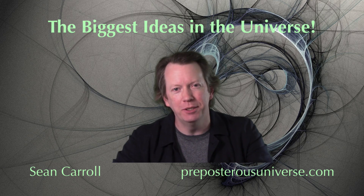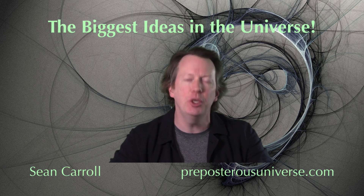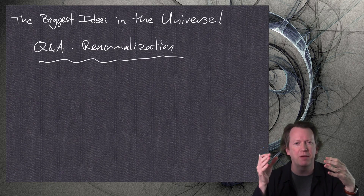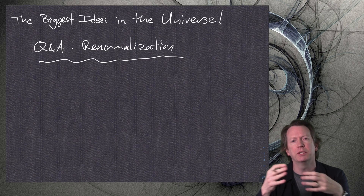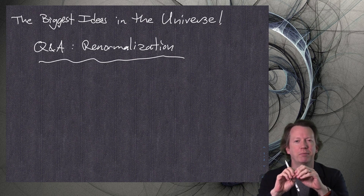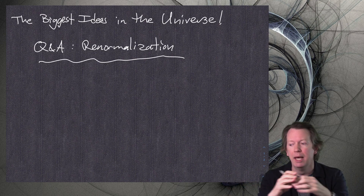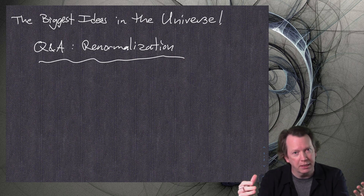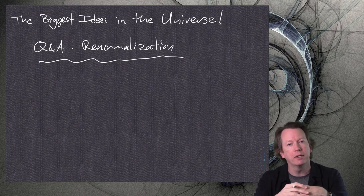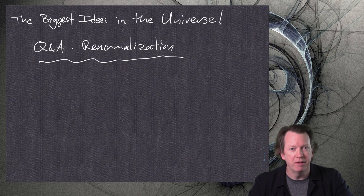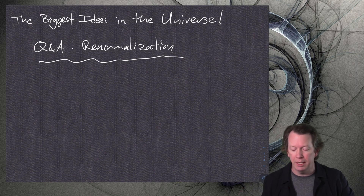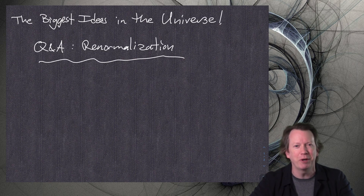Hello everyone! Welcome to the biggest ideas in the universe. I'm your host Sean Carroll and this is the Q&A video associated with idea number 11, which was renormalization. This was in a video that gave me an excuse to talk about effective field theories, the Wilsonian approach to renormalization, which says you tell me some ultraviolet cutoff, some energy scale above which I don't pretend to know what is happening, and I can give you a description of the infrared physics, what's happening at low energies, without knowing anything about very short distances or very high energies. We've got some pretty good questions, so I'm going to do a straightforward Q&A and rephrase them into my own terms.